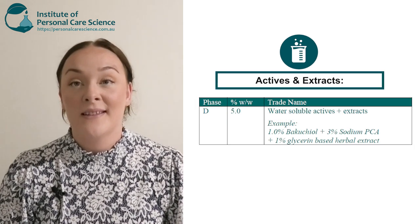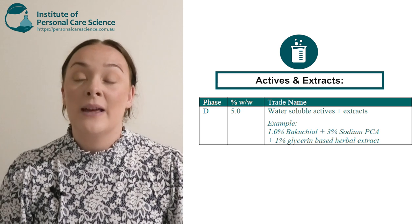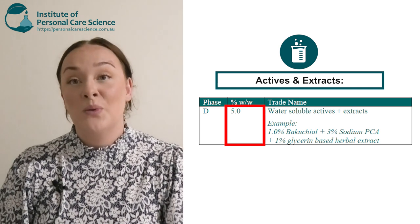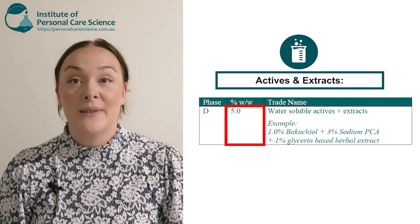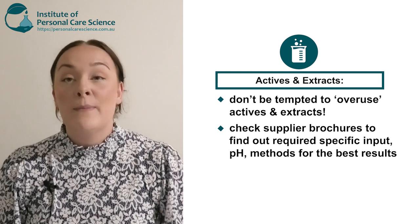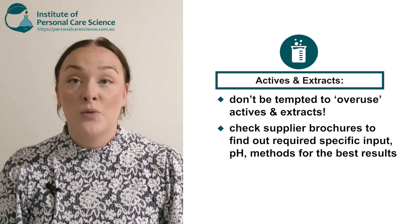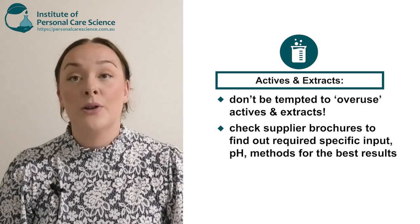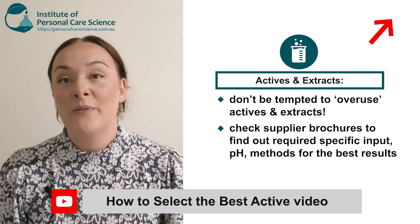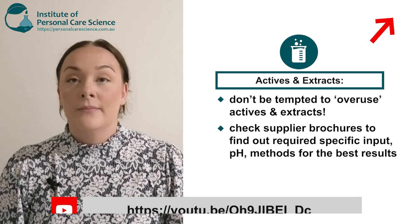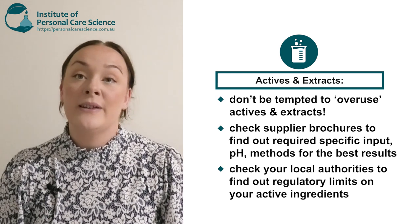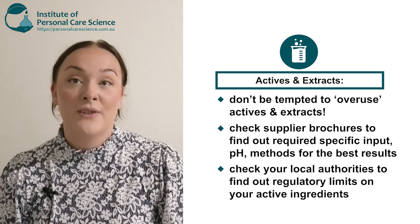Now it's time for your actives and extracts. We find that people tend to overuse these, so we recommend a combined total of 5%. You can use all actives or all extracts, but we recommend a mixture of both for best results. Please keep in mind that some actives require specific inputs, a specific pH, or other special processing methods, so it's really important that you check supplier brochures. Your actives may also have regulatory limits, so please check your local authorities or those of where you're selling your product to ensure there are no restrictions on any materials.